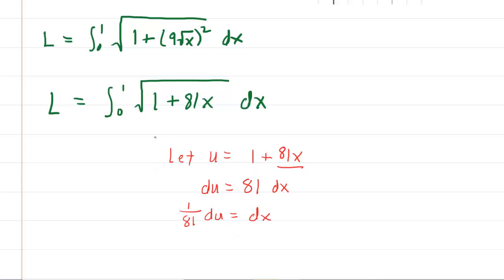It might also be useful to change the bounds in terms of u. Right now we have these as our bounds, but these are x values. So we'll change the bounds as well. Let's start with the lower bound, x equals zero. We plug that into our equation, so u equals one plus 81 times zero.